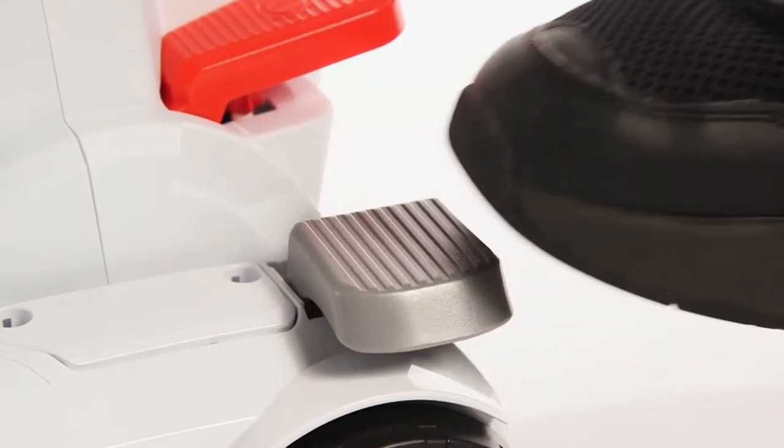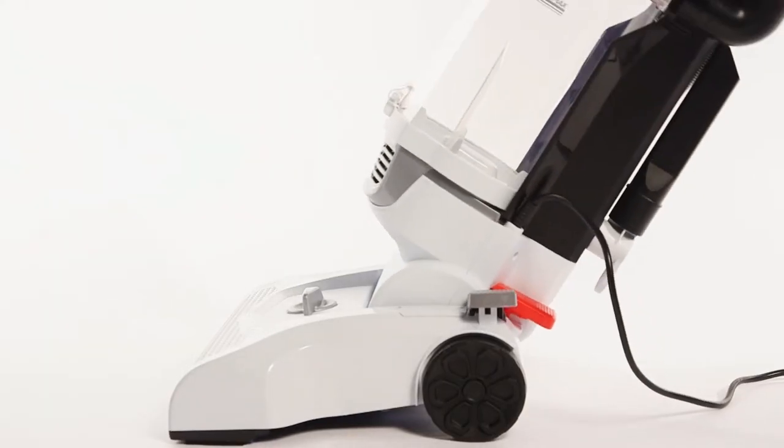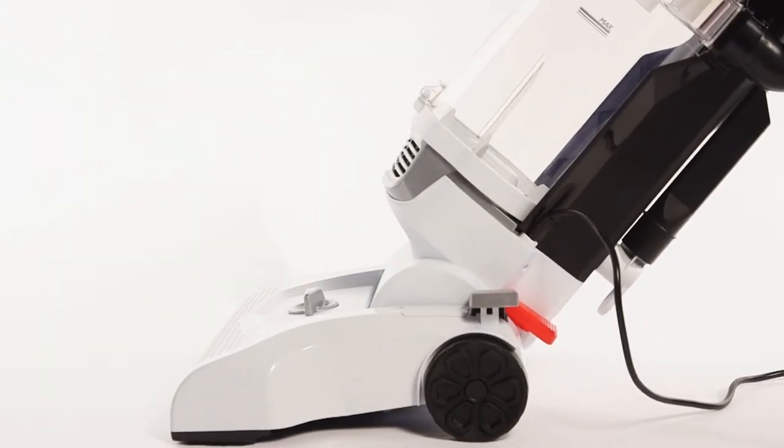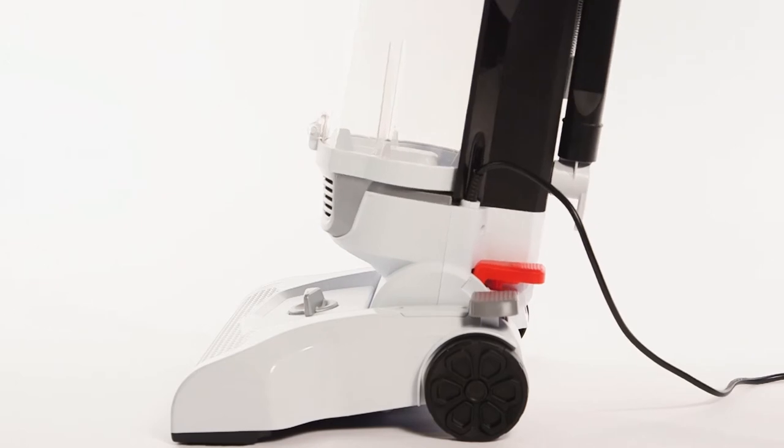Step on the cleaner release button to lower the handle into position for vacuuming. Push the vacuum handle fully forward to lock the vacuum upright.